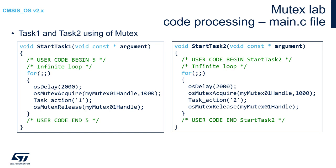Similar code should be placed within the endless loop of StartTask2, but with a different argument for the task action function. After those operations, please build the code, start a debug session, run the single-wire viewer ITM viewer, and run the code.